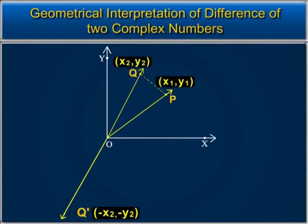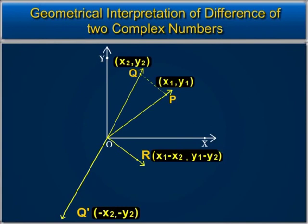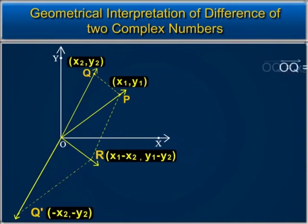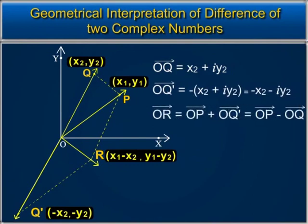Vector OQ dash, having the same magnitude but opposite direction to vector OQ, represents the negative of complex number x2 plus i·y2. Now, we will use the concept of vectors to represent the difference of complex numbers geometrically. Draw a parallelogram OPRQ dash in which vector OQ dash and vector OP are the adjacent sides. Vector OR represents the sum of vector OP and vector OQ dash, or equivalently, vector OR represents the difference of vector OP and vector OQ.